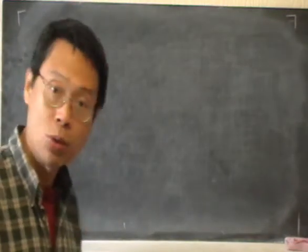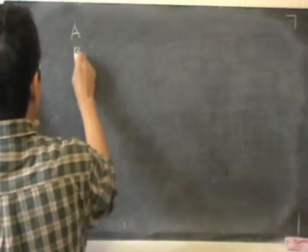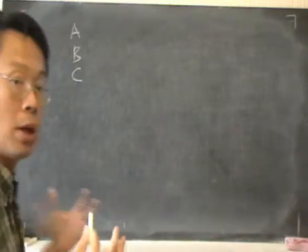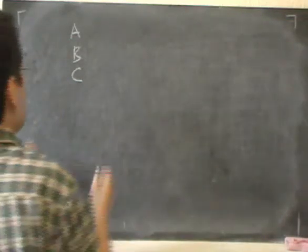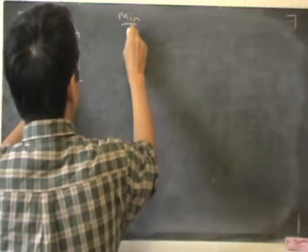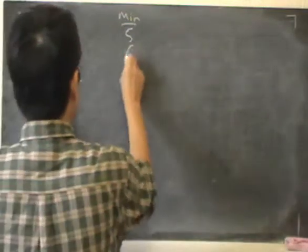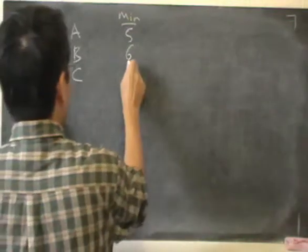Hello, we'll carry on with more questions on arithmetic. In this question we have three buses A, B and C. These three buses are at a bus station. From this bus station, bus A leaves every five minutes, bus B leaves every six minutes, and bus C leaves every nine minutes.